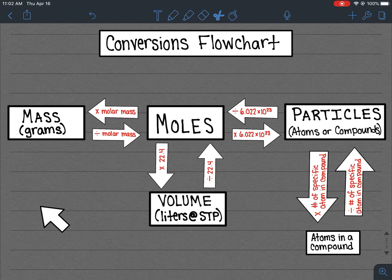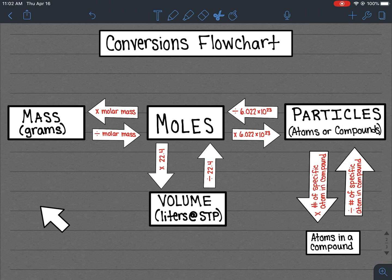I wanted to provide a resource for those of you who are finding it a little bit challenging to use the dimensional analysis method for converting in stoichiometry. And so this conversions flowchart that I've created for you is going to help you to solve probably about 90 to 95% of the problems that you'll encounter.